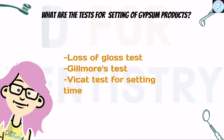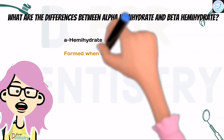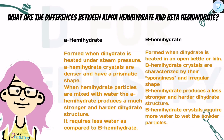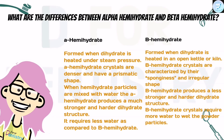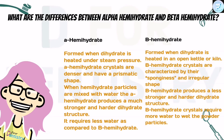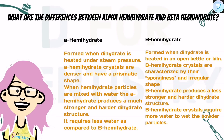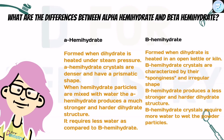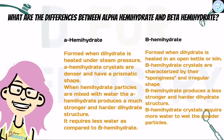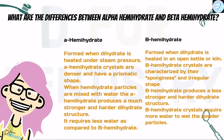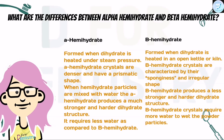What is the difference between alpha and beta hemihydrate? Alpha hemihydrate is formed when dihydrate is heated under steam pressure, while beta hemihydrate is formed when dihydrate is heated in an open kettle. Alpha hemihydrate crystals are denser and have a prismatic shape, while beta hemihydrate crystals are characterized by sponginess or irregular shape. When mixed with water, alpha hemihydrate produces a much stronger and harder dihydrate structure, while beta hemihydrate produces a less strong and harder structure. Alpha hemihydrate requires less water, while beta hemihydrate requires more water to wet the powder particles.